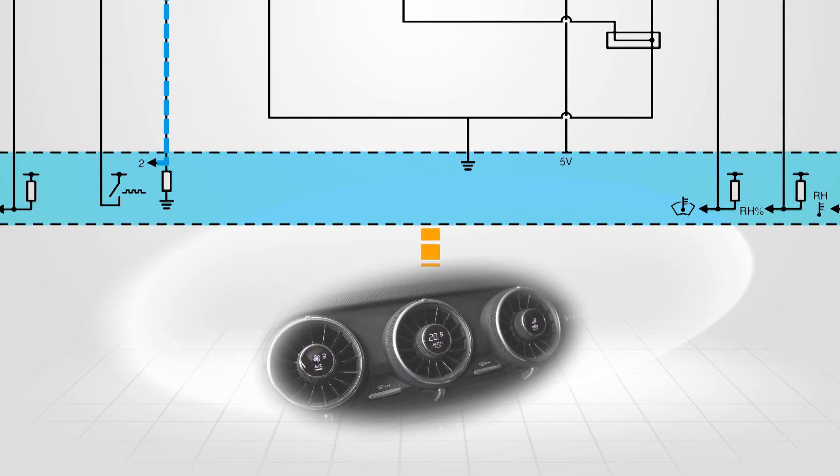Using this current flow method, the HVAC control module recognizes the sunlight strength and regulates the interior cabin temperature accordingly.